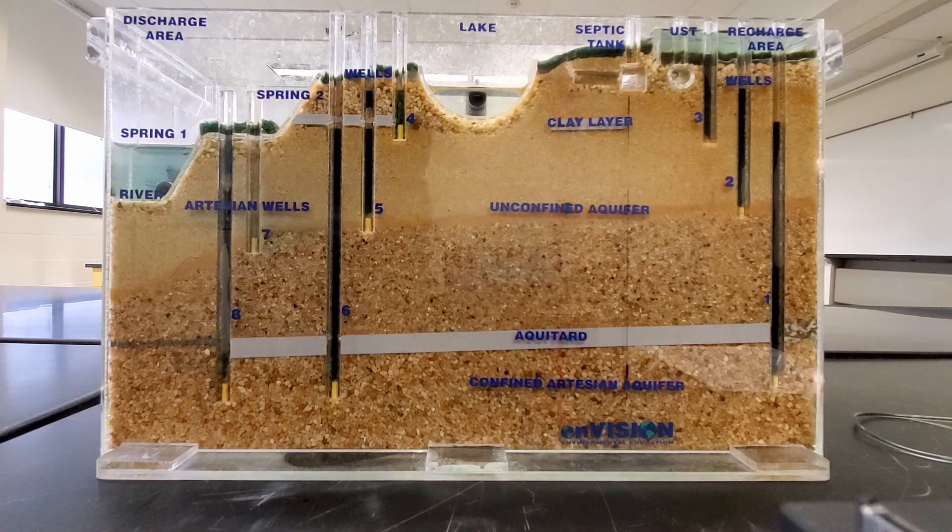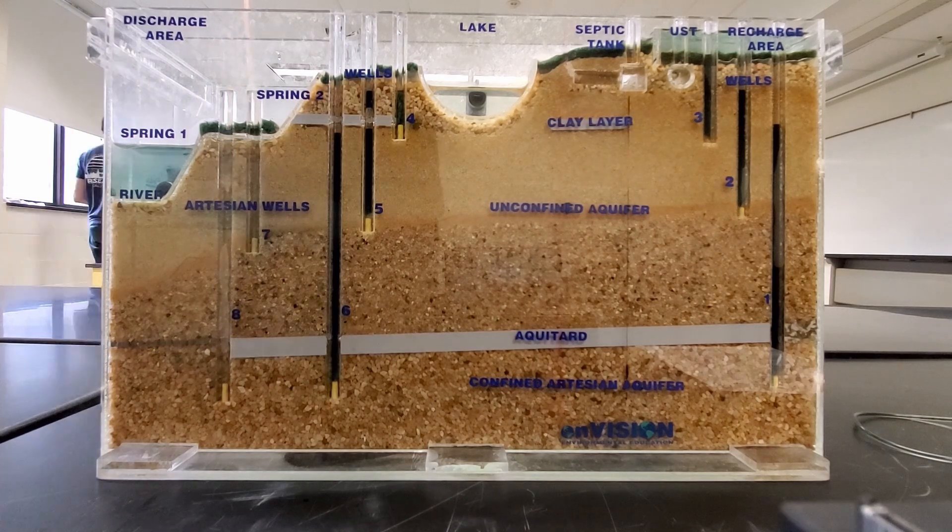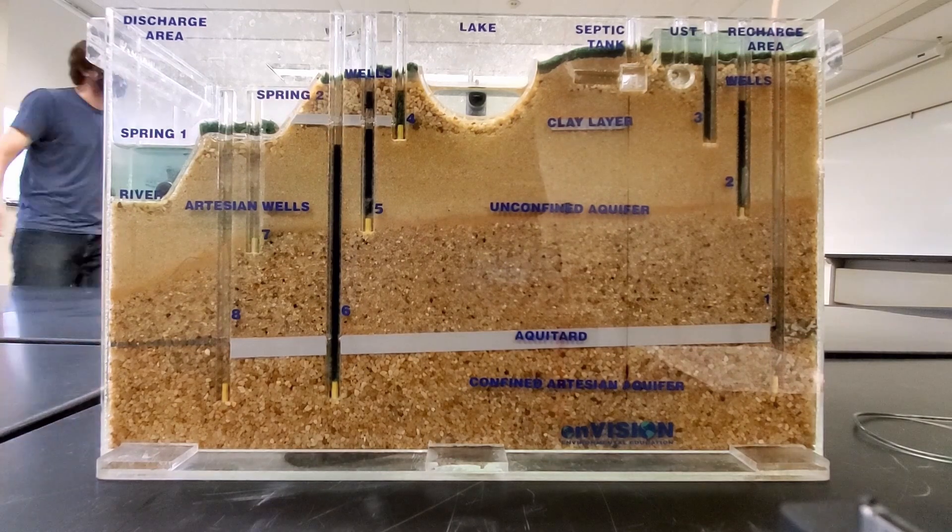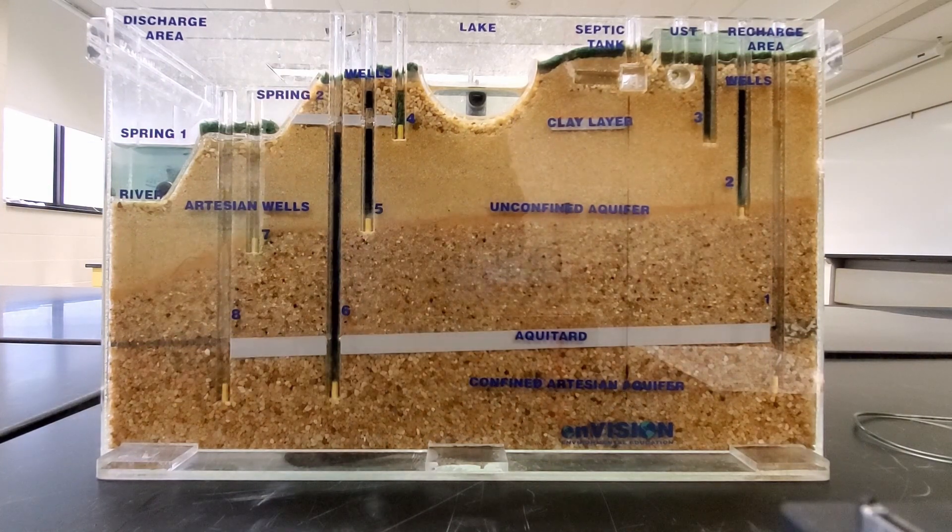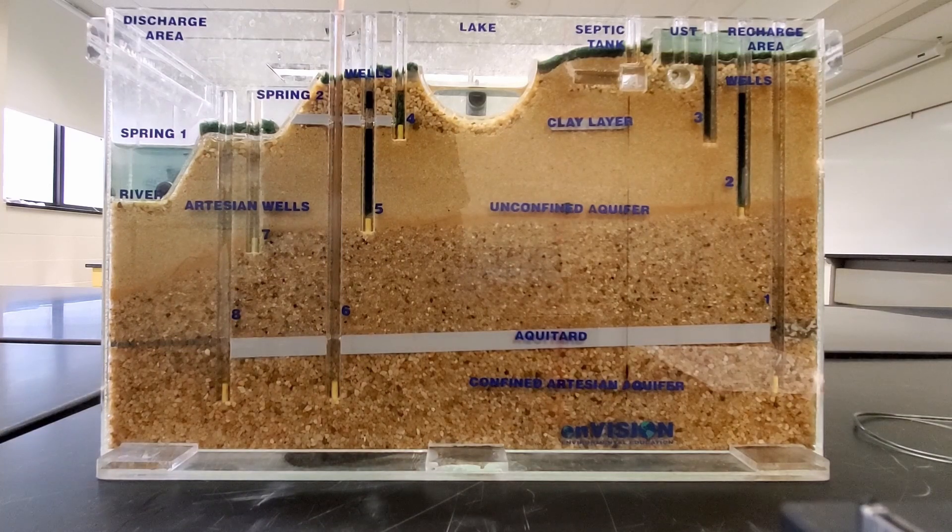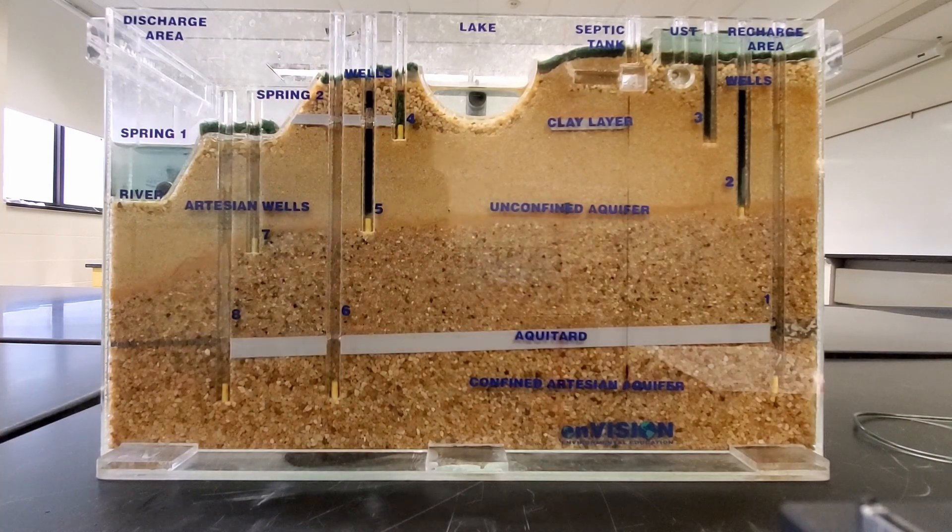Afterwards, we remove the dye from each of the wells with an eyedropper. Similar processes along with dispersion techniques and chemical treatments can be applied to real contamination sites. These endeavors are referred to as groundwater remediation, which we will cover in a later video.